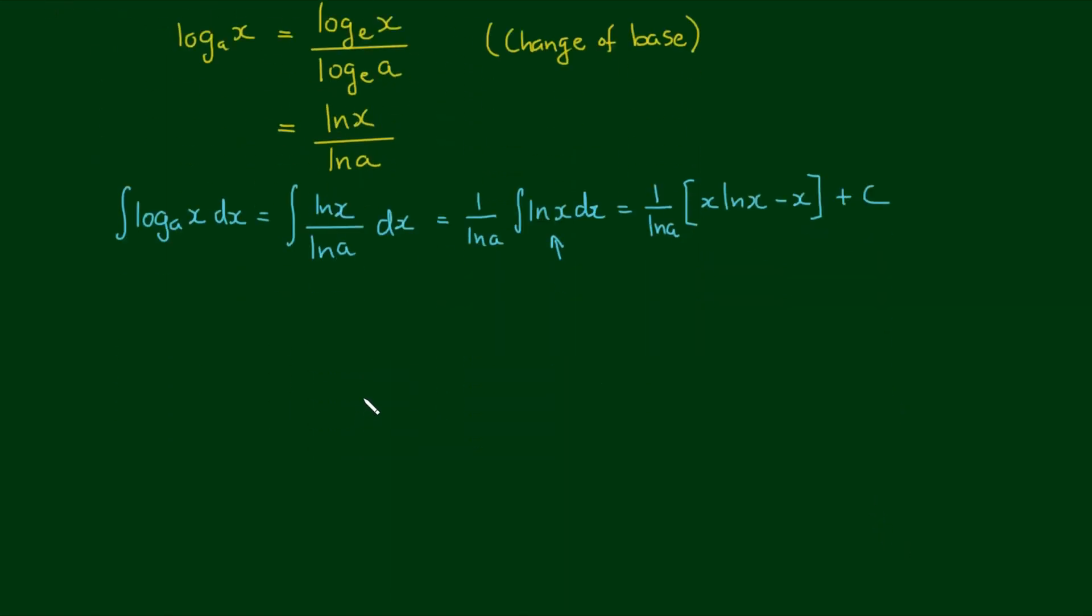Okay, so for completeness we'll write this out more neatly. The integral of log to the base a of x dx is equal to 1 over the natural log of a times x times the log of x minus x plus an integration constant c. Let's box this answer and you can add this now to your table of integrals.